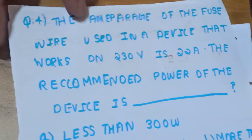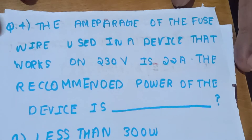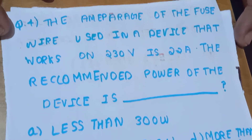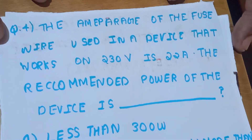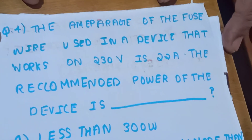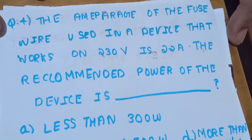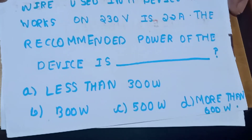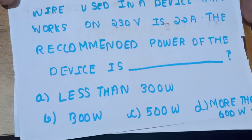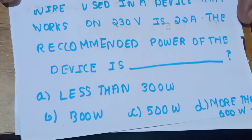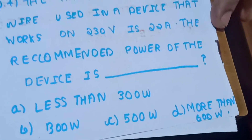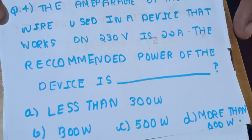Question number 4. The amperage of the fuse wire used in a device that works on 230V is 2.2A. The recommended power of the device is dash. Options: less than 300W, 300W, 500W, and more than 600W.